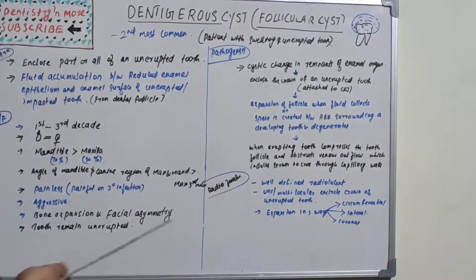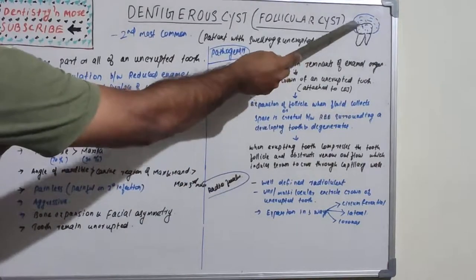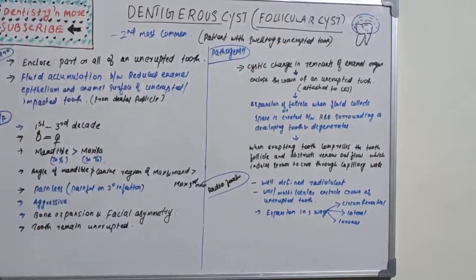Usually these patients come to the clinic with a swelling and an unerupted tooth, so there is swelling associated with unerupted tooth. You might keep a differential diagnosis of dentigerous cyst as a common symptom.